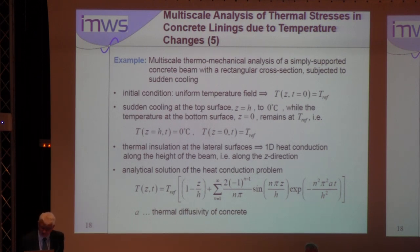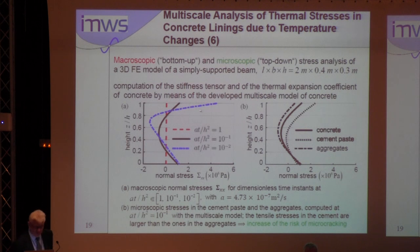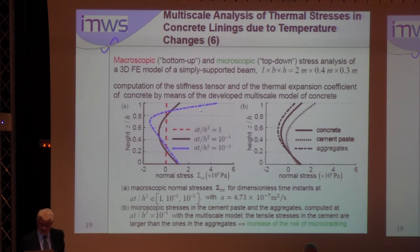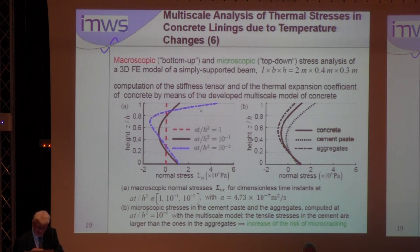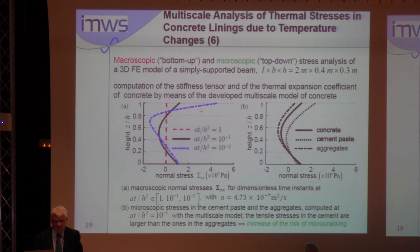The formula, which can be taken from any textbook, contains A, the thermal diffusivity of concrete. We performed macroscopic (bottom-up) and microscopic (top-down) stress analysis of a 3D finite element model of a simply supported beam. The left figure shows the macroscopic normal stress σ_xx for a dimensionless time instance at t·A over a-squared. For the smallest value of 10 to the minus 2 (blue dash-dotted curve), there are significant tensile stresses at the upper surface, becoming smaller as time increases. When t/a-squared equals 1 at stationary conditions, there are no stresses because no external loading was applied.